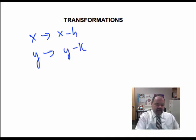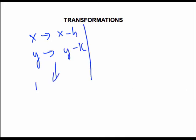And what we found in that case is that this caused a translation, a slide of the graph, h units horizontally and k units vertically.